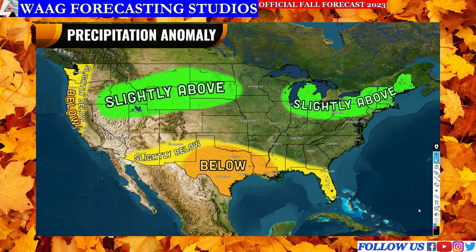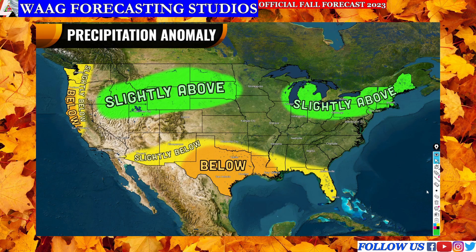Here on our first slide we're going to be going over our precipitation anomaly forecast map for this fall season. This is going to be showing you what kind of precipitation you can expect — whether more or less than what you typically would see in a fall season.